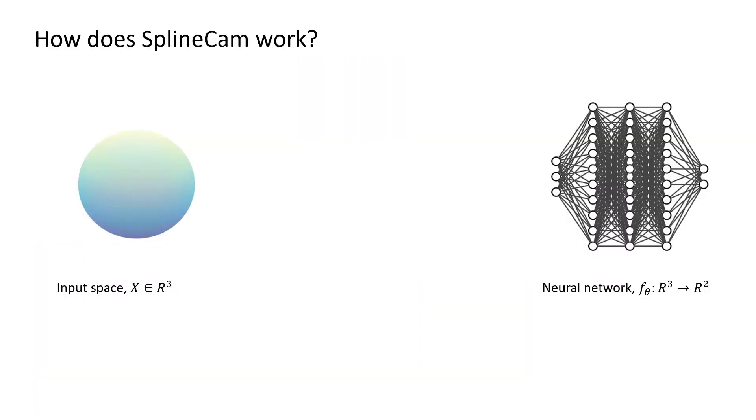Suppose we have our ReLU-activated DNN, fθ, with a three-dimensional input space and a two-dimensional output space. fθ has been pre-trained to take as input 3D coordinates x and classify whether the coordinate is inside or outside a sphere.